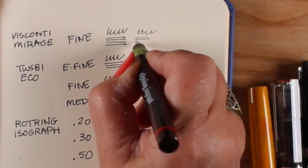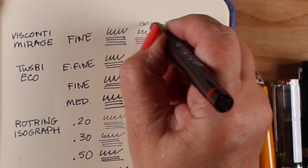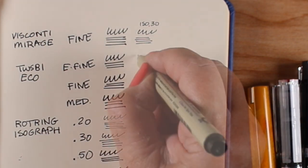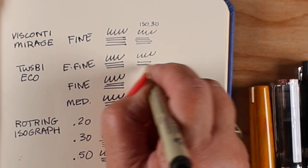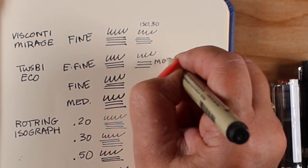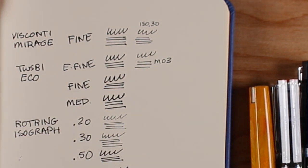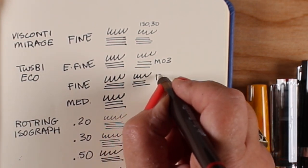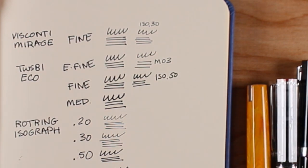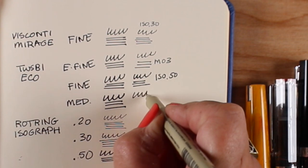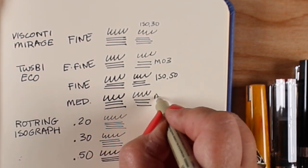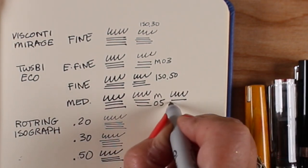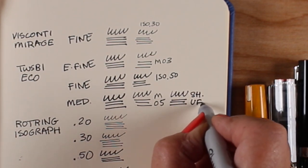So I also am doing a little comparison here. The line weights trying to find something that approaches the Visconti Mirage, probably the Isograph 0.3 maybe. It's close. The Twisby Eco extra fine you could probably substitute for that a micron in the 03 size. And then the fine in the Twisby Eco is probably about the same weight as the Isograph 5.0 or 0.50. And I don't know why anybody does these numbers because they don't mean anything compared to anybody else's numbers. They all use their own systems.